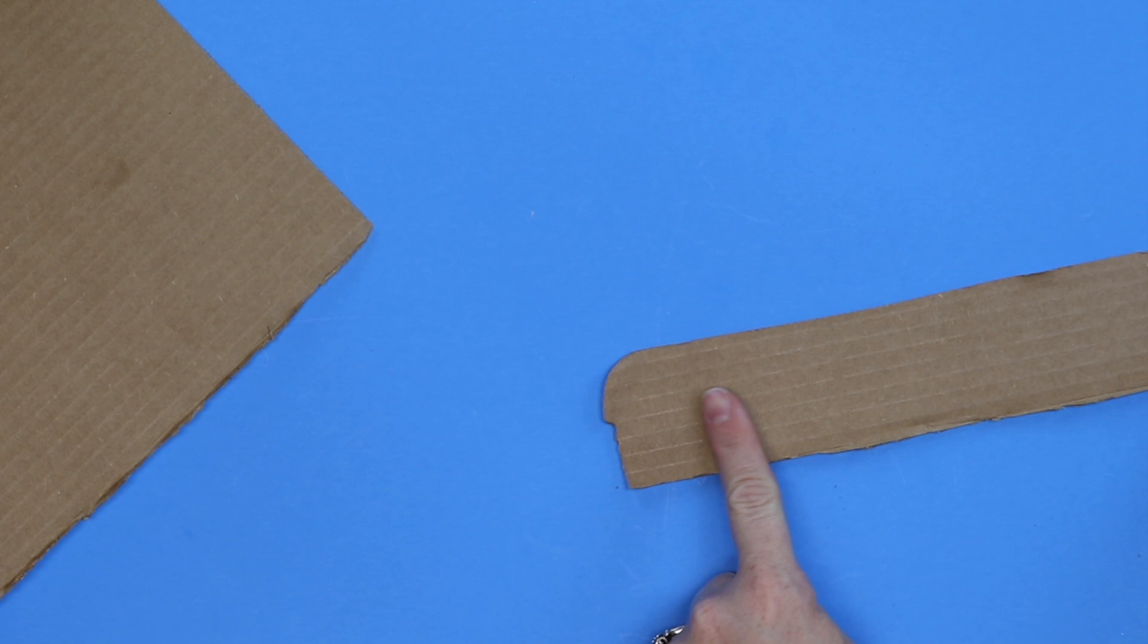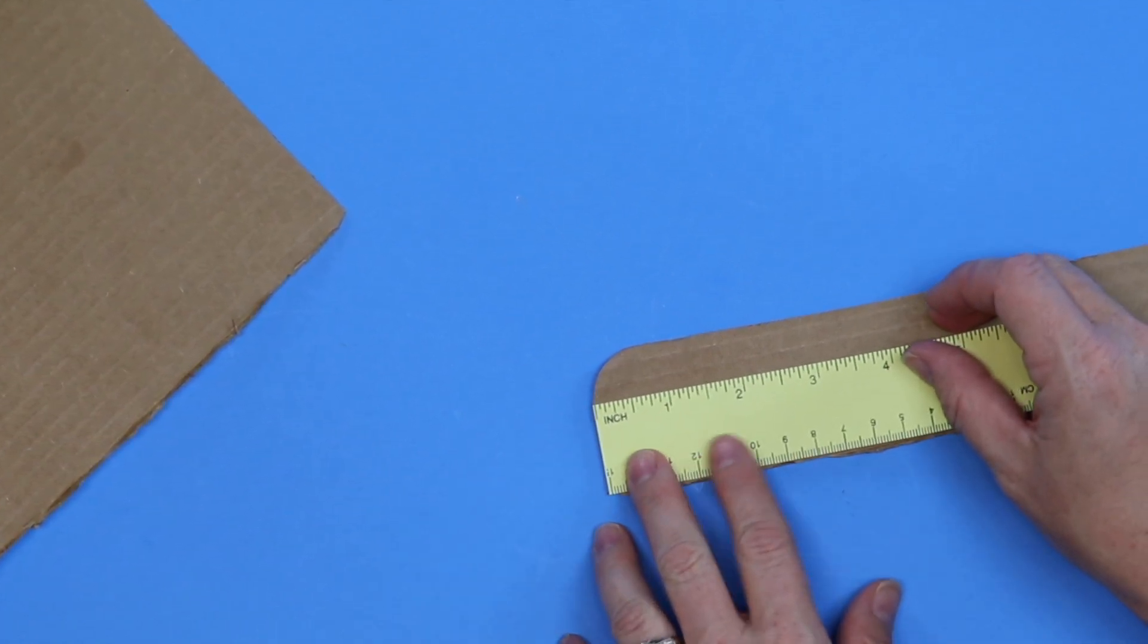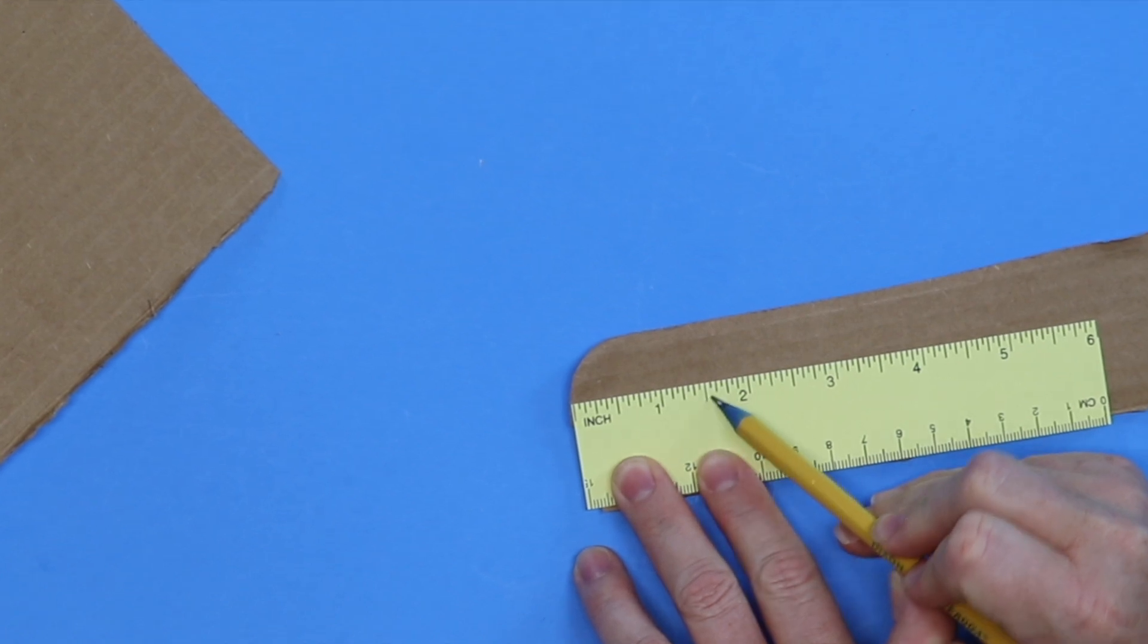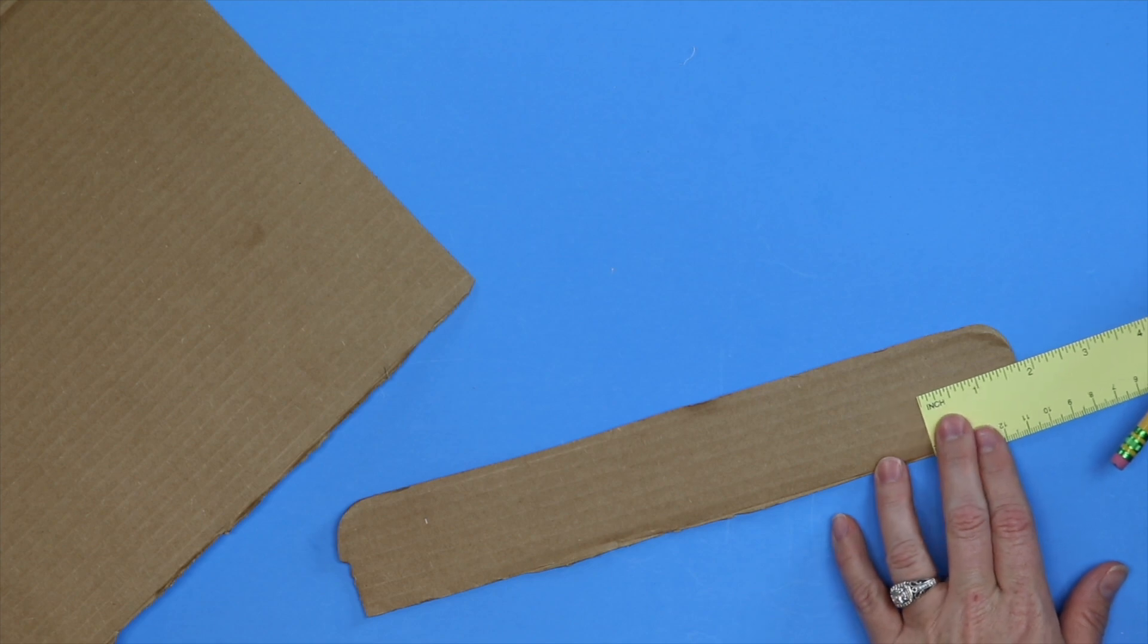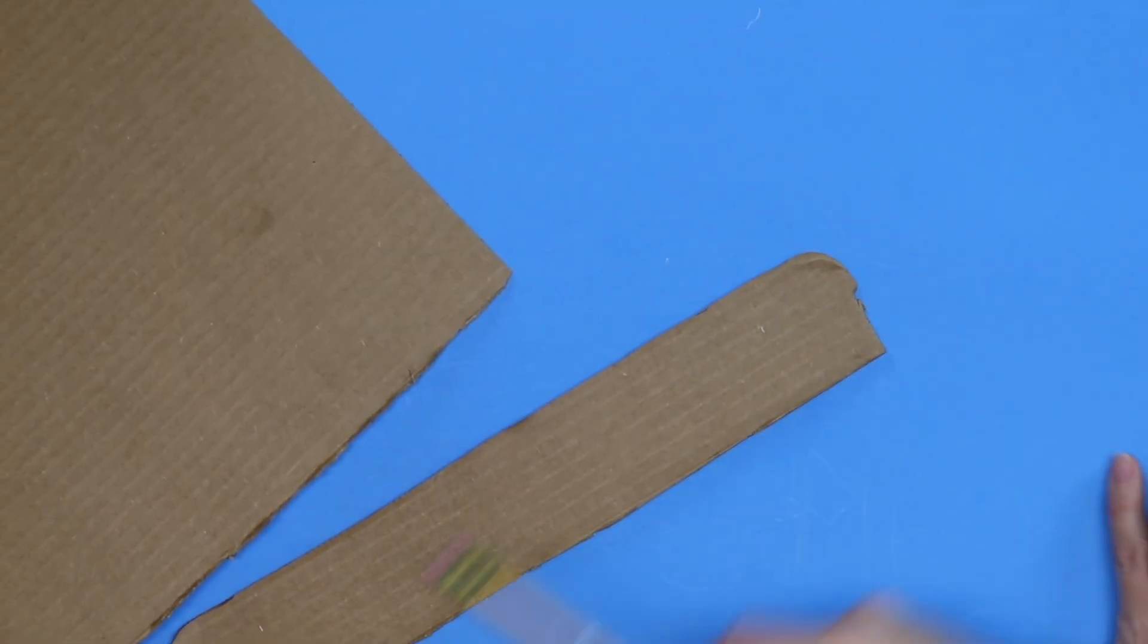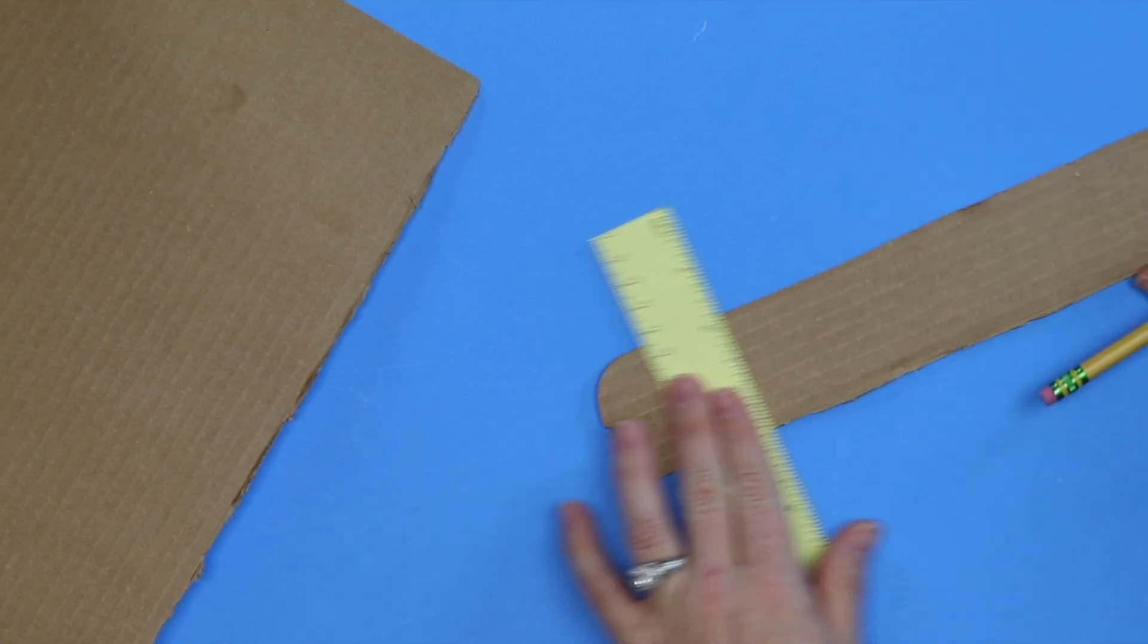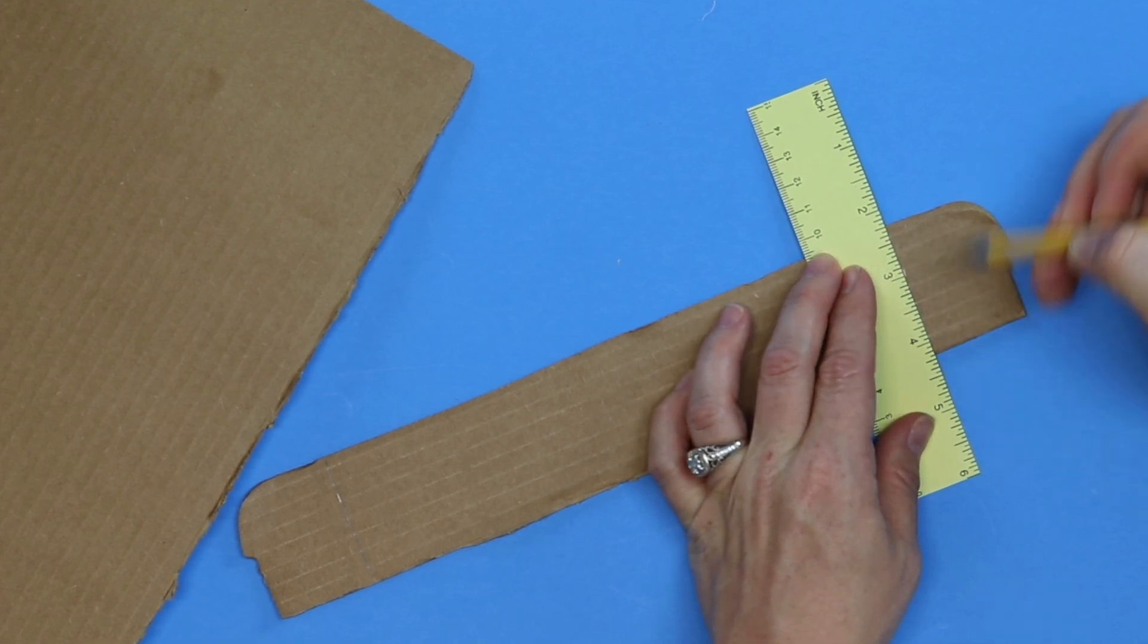We need to bend back the edges of this flap. We're going to mark it at one and a half inches. So we have our ruler and we go one and a half is right between one and two. Yep, and go to the other side. Measure one and a half inches. And go straight down that line. Straight down this line.